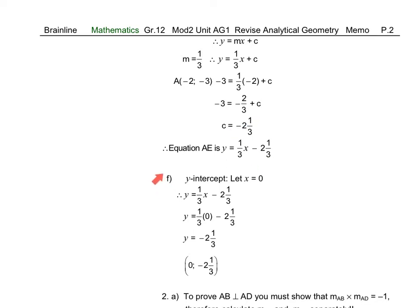Question F: to determine the y-intercept of line AE, we set x equal to 0 to find the y-value on that line. When we substitute x with 0, one-third times 0 is 0, and we are left with minus 2 and one-third, which is my y-intercept on the straight line of AE.